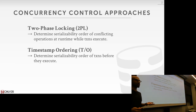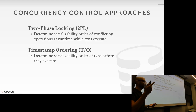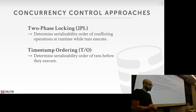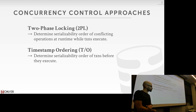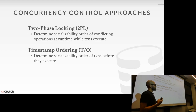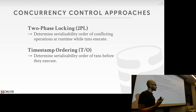Last lecture, Matt covered two-phase locking, which is a mechanism that the database can use to generate serializable schedules at runtime, relying on locks. Today we're going to be talking about a collection of protocols that don't rely on locks, but instead rely on timestamps.